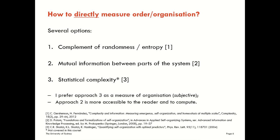In comparing these different approaches, I prefer approach three — statistical complexity — as a measure of organisation in general. That's a subjective judgment though, and you should make your own determination. What I will say is that approach two is more accessible to the reader and more accessible to compute in general. If you would like to read more about those direct measures of order or organisation at a system level, I suggest you have a look at the references here.